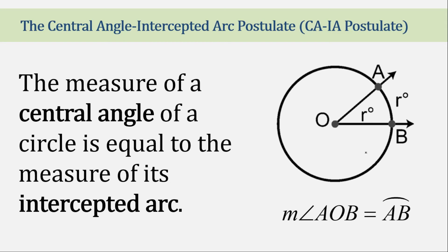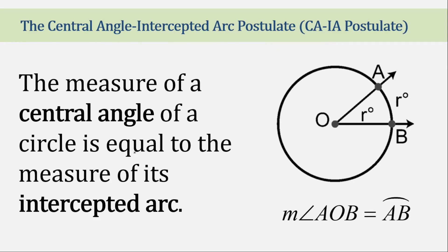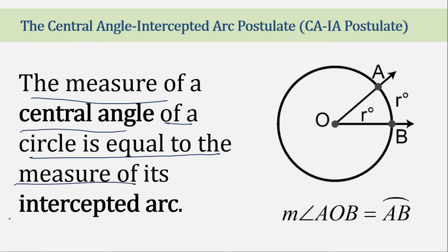Now let's go to the central angle intercepted arc postulate itself. It simply states that the measure of the central angle of a circle is equal to the measurement of the intercepted arc. So if this is central angle AOB, its measure in degrees is equivalent to the measure of arc AB, because arc AB is its intercepted arc.